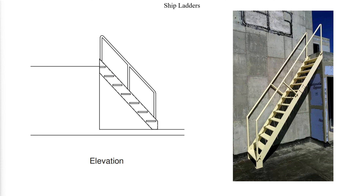In ship ladders, the treads are flat and handrails are typically provided on both sides. Typically, the same rules and slopes as alternating tread stairs apply.